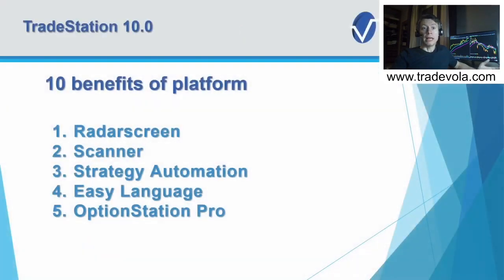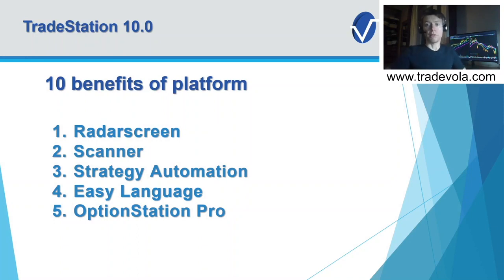So what are the 10 biggest benefits? We want to start with the five main facts: Radar Screen, Scanner, Strategy Automation, Easy Language, and the Option Station Pro.